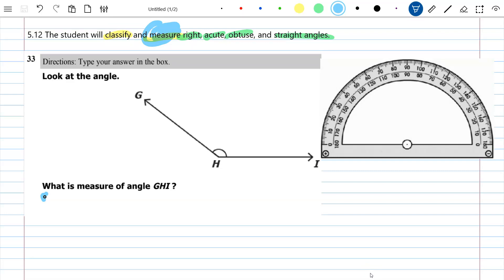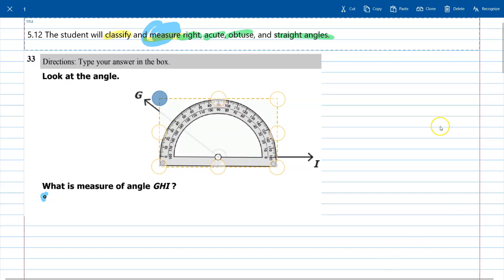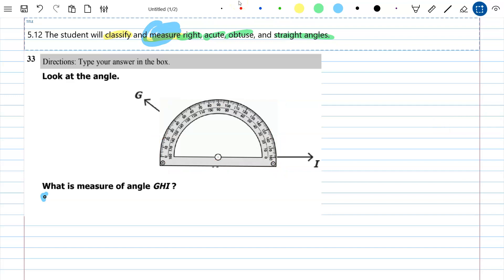If it had been a paper test you would have gotten a protractor and measured it like this. Here is my angle, angle GHI. This part of my protractor is right on the vertex, right on H. Then one ray here goes to 180 - that's not my measurement because this is an obtuse triangle.